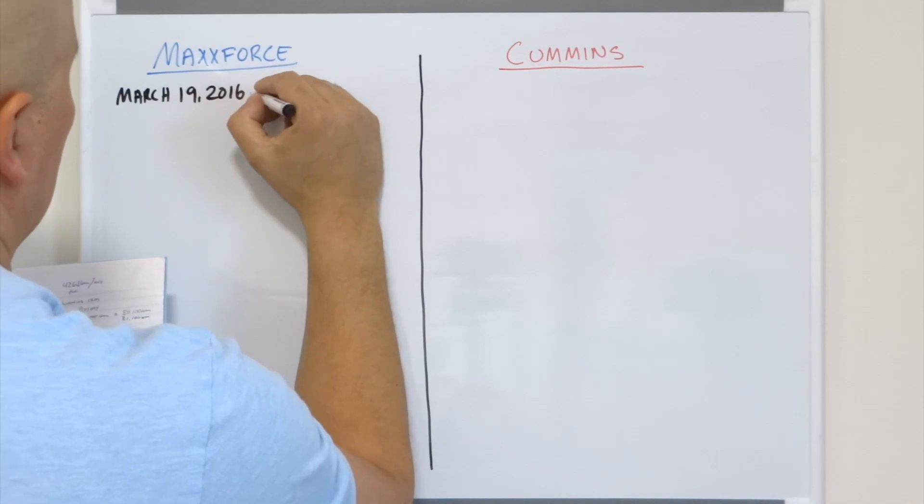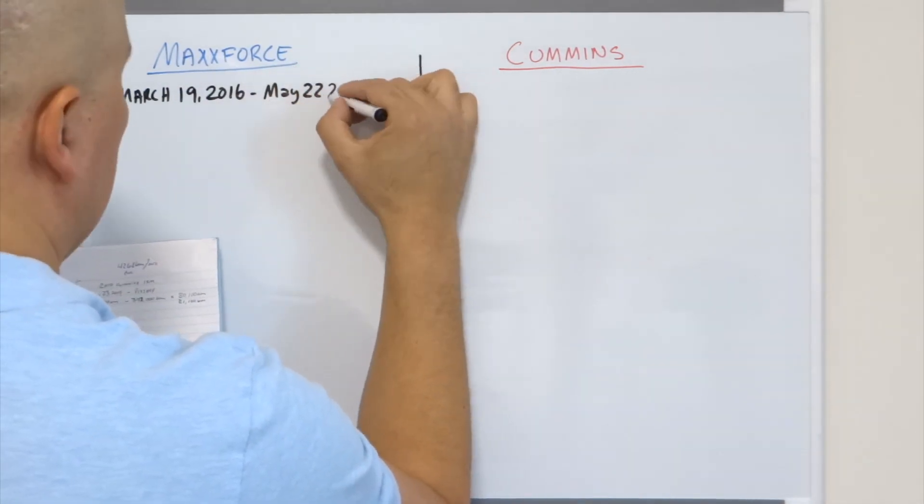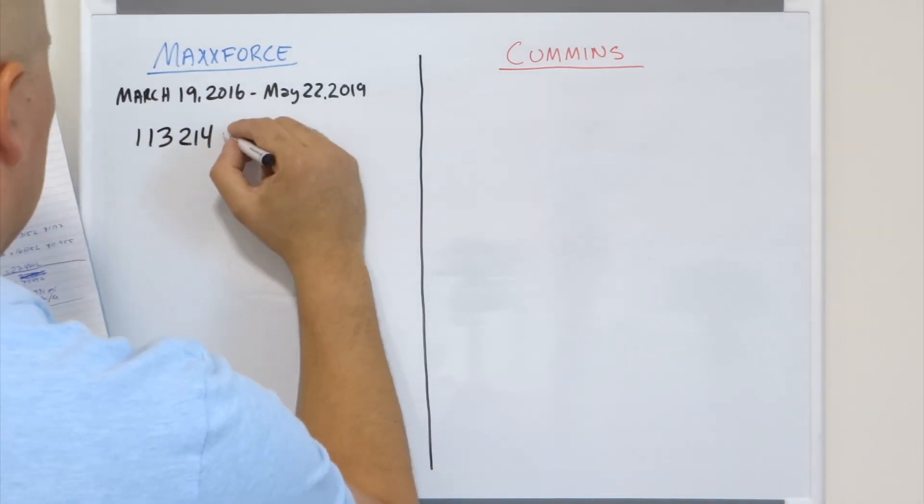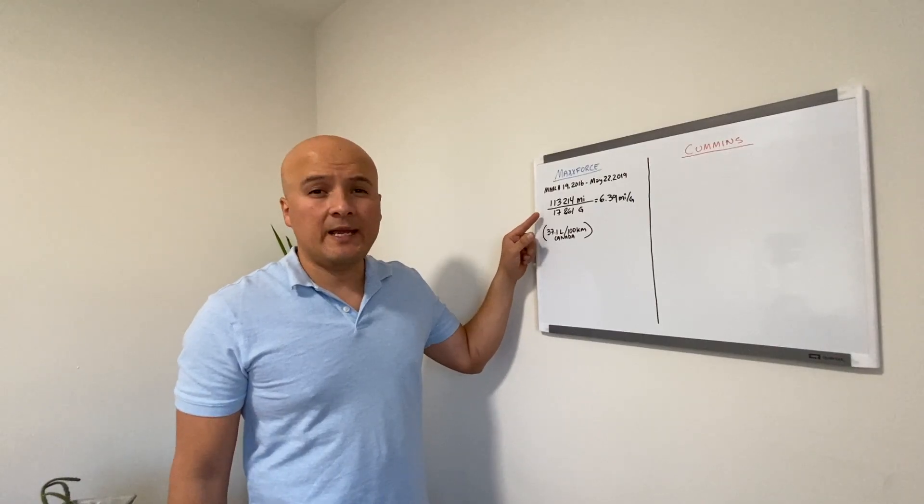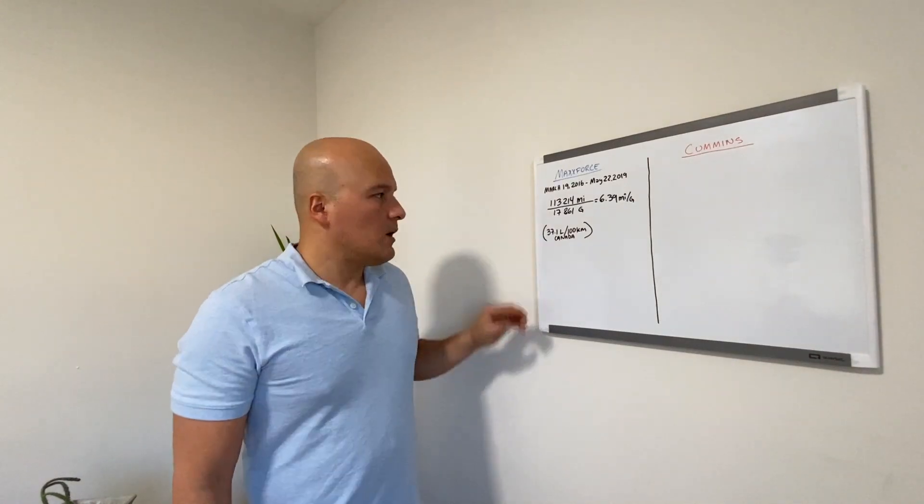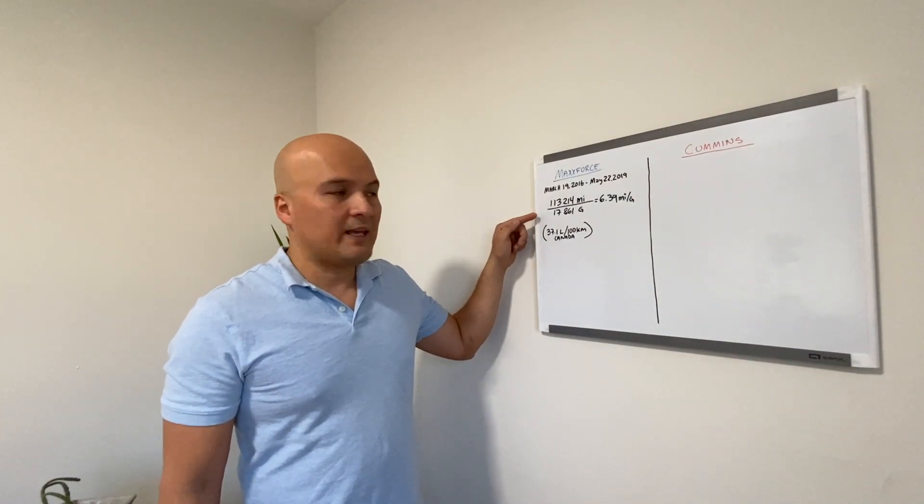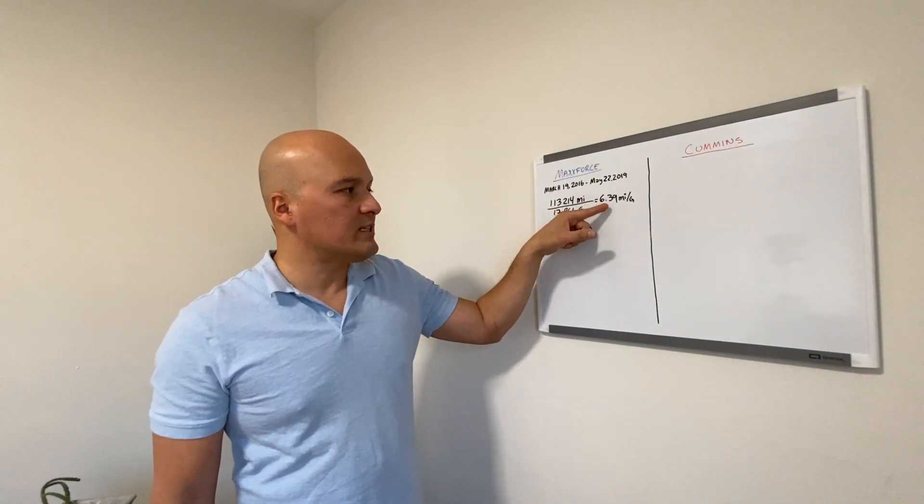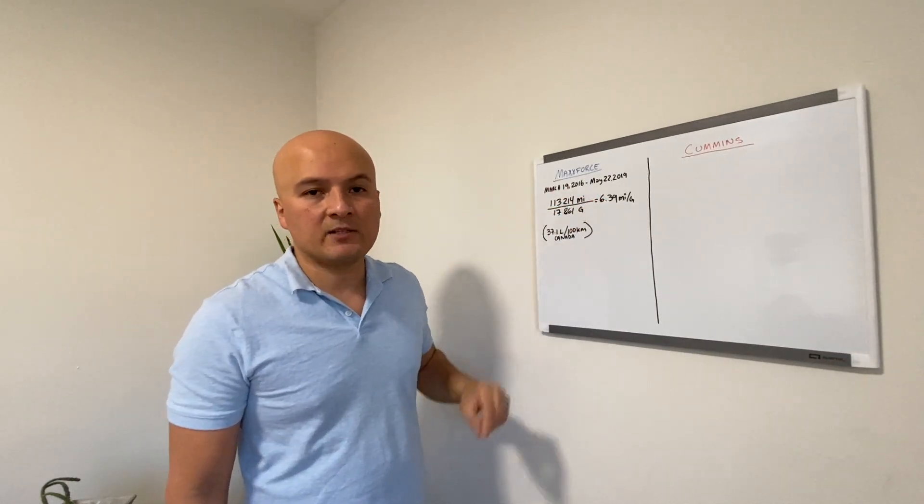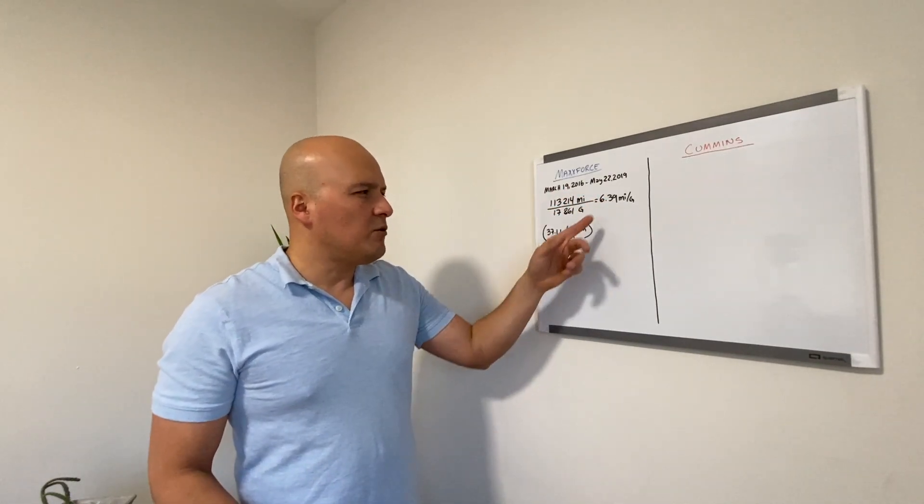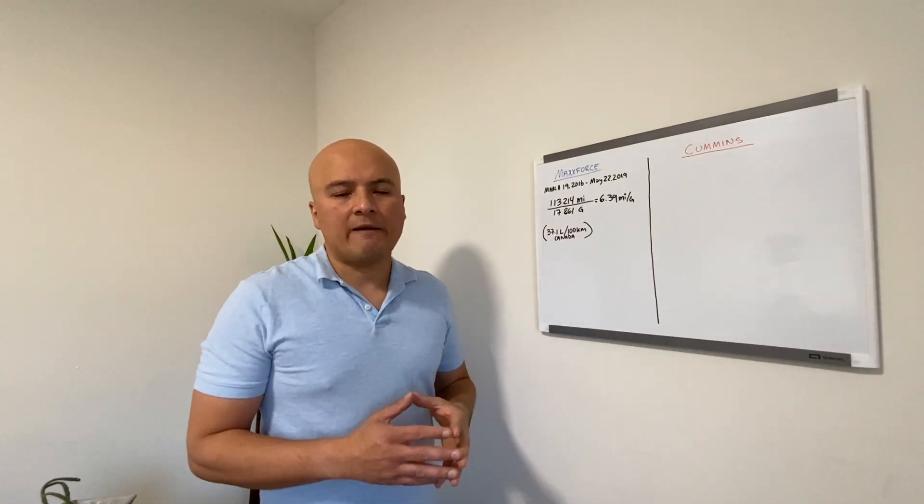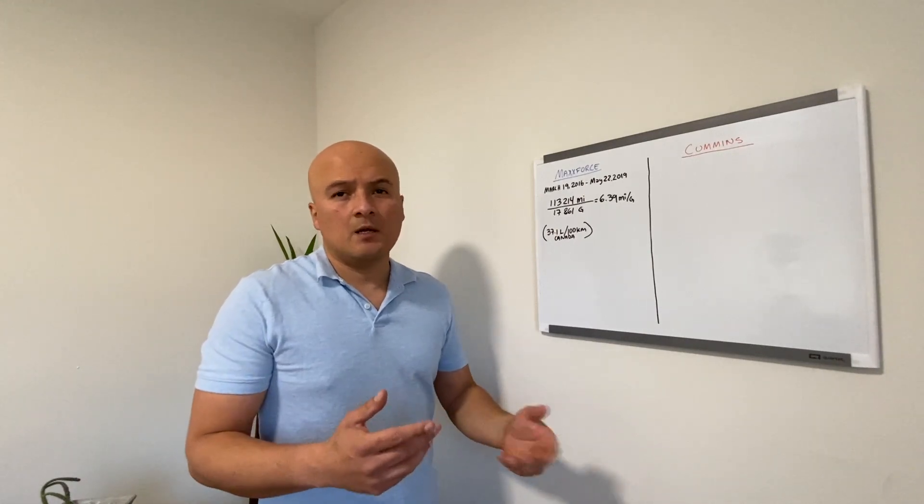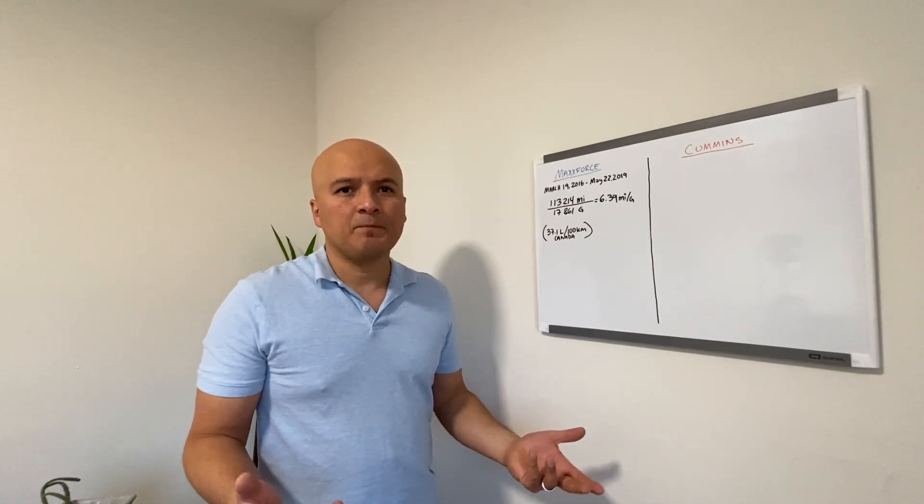The MaxForce engine, I had it from March 2016 to May 2019, and I drove it for 113,214 miles. I came up with 17,861 gallons. If you divide the mileage over the gallons, then you get your miles per gallon. So my miles per gallon was 6.39 miles per gallon for the MaxForce. So if you think that this is a little bit bad, I'm a city driver, right? So city drivers, we drive through cities and there's traffic, there's roadblocks, there's accidents, there's a ton of red lights.